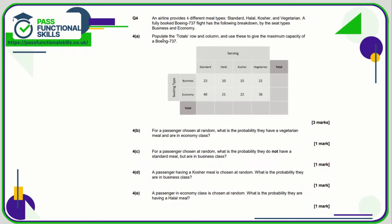Question four: first, we populate the table by adding the rows and columns. Forty plus 23 is 63; then 31, 37, 57. The row totals come to 69 and 119. This grand total should equal both 69 plus 119 and 63 plus 31 plus 37 plus 57 — if those aren't the same, there's a mistake.